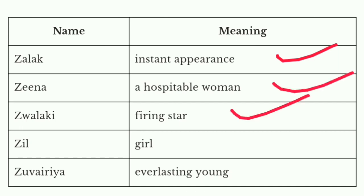Jalaki, meaning freeing star. Next name: Jubari, also given as Jubariya, meaning everlasting young. Thanks for watching this video — don't forget to subscribe to this channel.